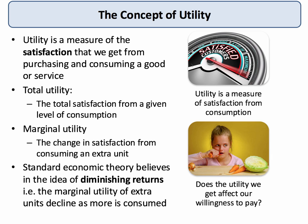Total utility is the overall accumulated satisfaction from a given level of consumption. The key to this analysis is marginal utility — that's the change in total utility, or the change in total satisfaction, from consuming one extra unit of a product. Standard neoclassical economics assumes that utility is diminishing, and as we consume extra units the marginal utility tends to fall.